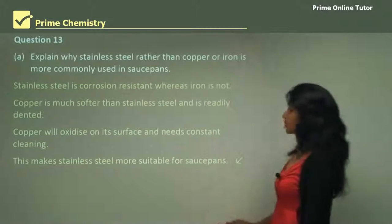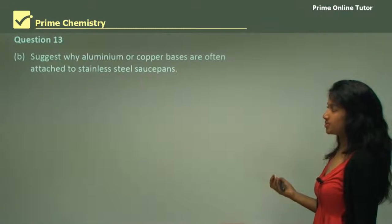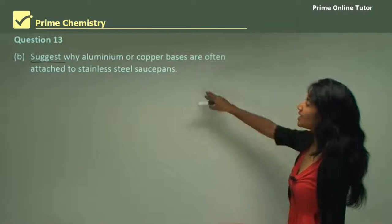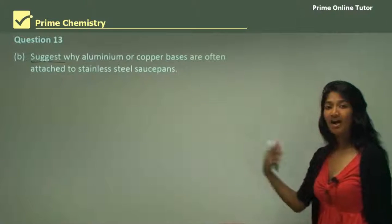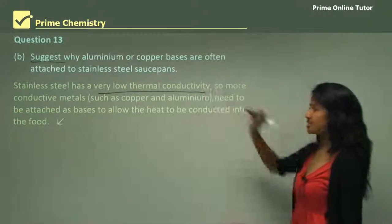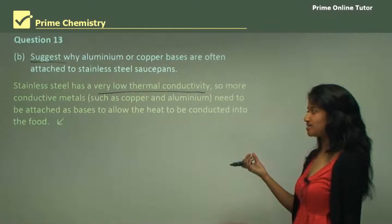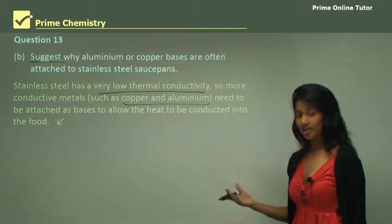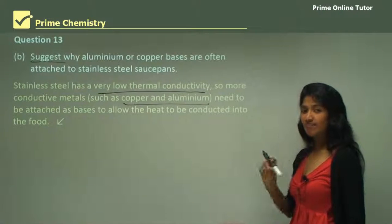Section B: suggest why aluminium or copper bases are often attached to stainless steel saucepans. We underline the keyword 'suggest' and consider why stainless steel is not sufficient and why aluminium or copper would provide a better base. Stainless steel has a very low thermal conductivity, so more conductive metals such as copper and aluminium need to be attached as bases to allow the heat to be conducted into the food. Always break the question into sections and answer every part to get full marks.